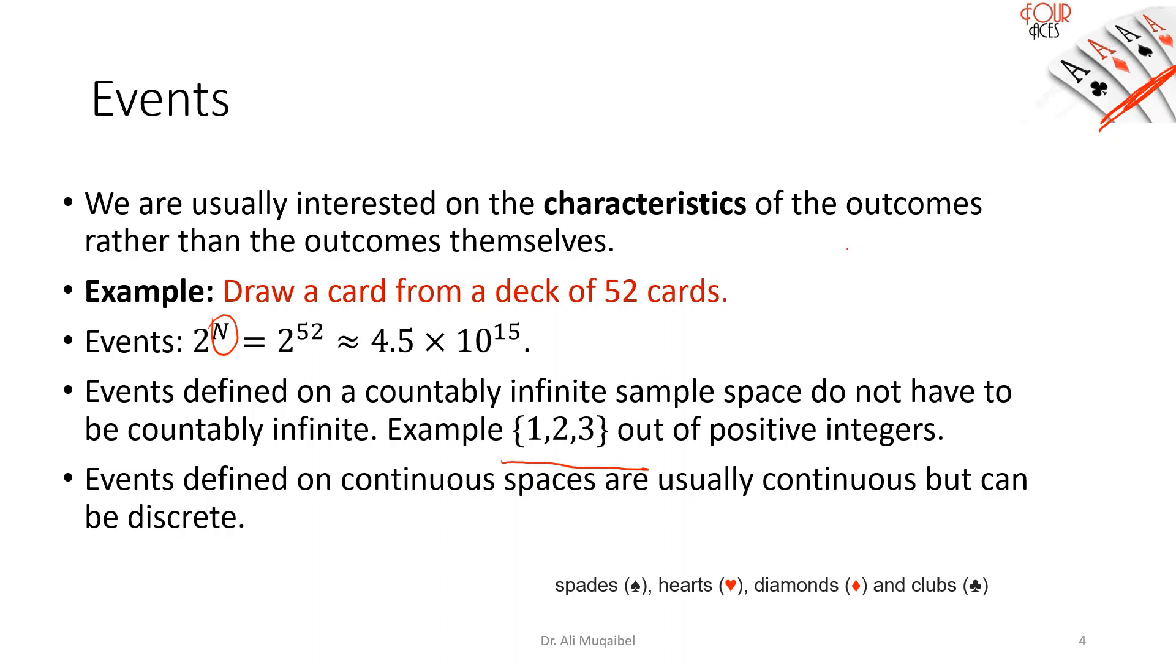Now, again, we can also say that events defined on continuous spaces are usually continuous. Like if you pick a number between one and hundred, usually we have ranges, for example from one to two or three to four. But we can also define discrete outcomes, for example, what's the probability that you pick three or four out of the continuous range from zero to 100.